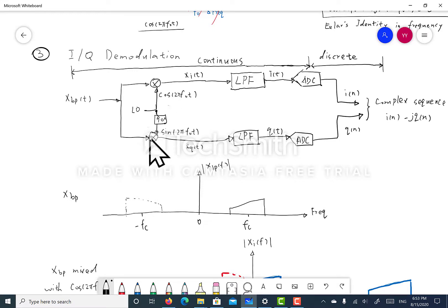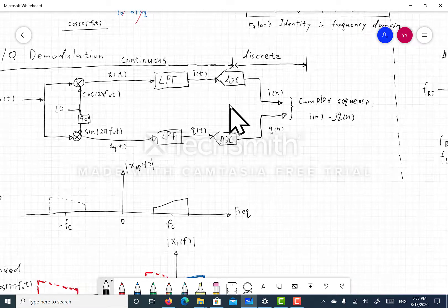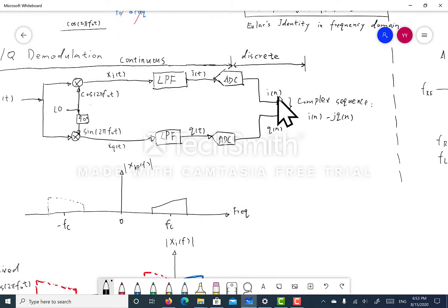So the mixers mix down the incoming RF signal to a baseband signal. After the low-pass filter, only the baseband signal around the DC frequency area would remain. Then we do an A to D conversion and we get two arrays of data, one for in-phase, one for quadrature phase.